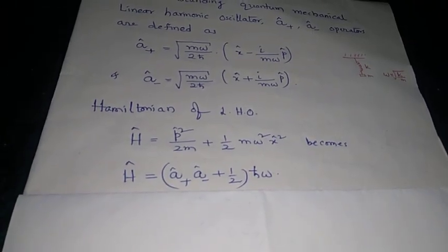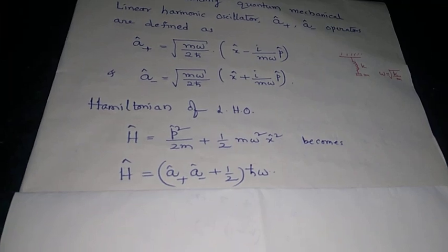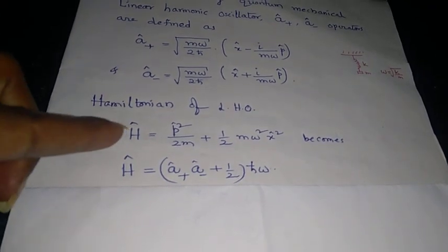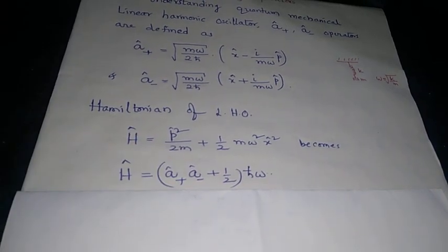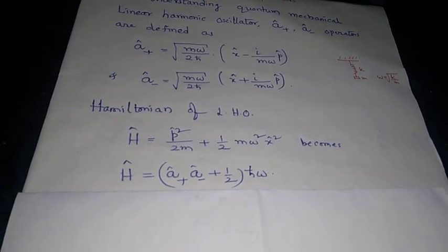The Hamiltonian of the linear harmonic oscillator, which is the first expression with H hat, becomes A plus into A minus plus half into H bar omega in terms of these operators.